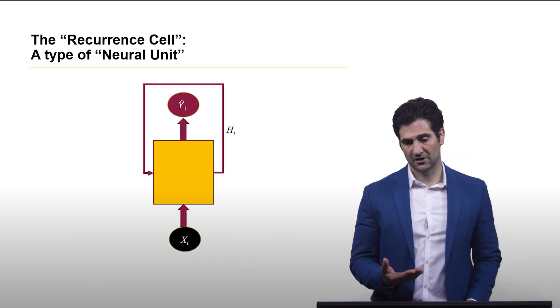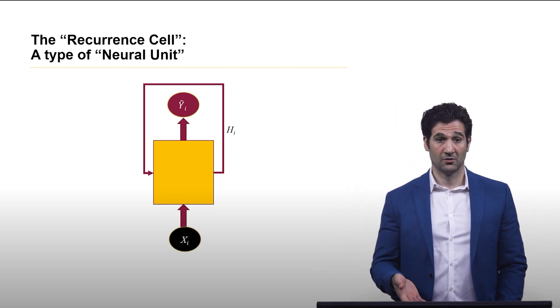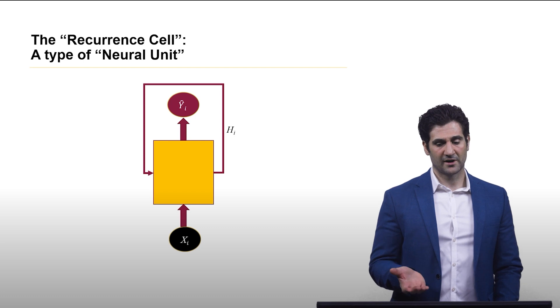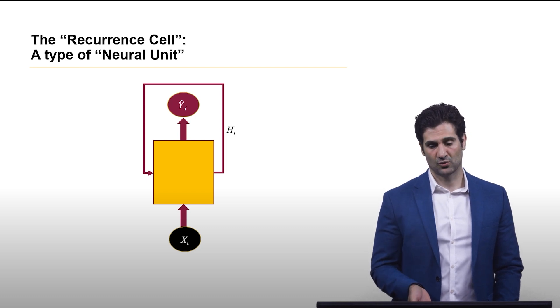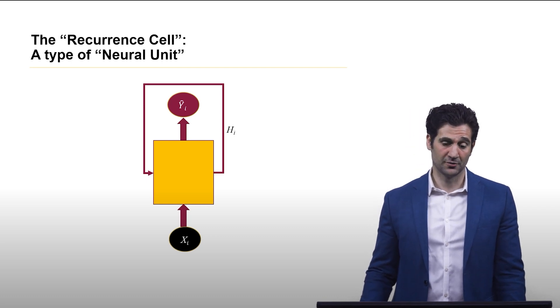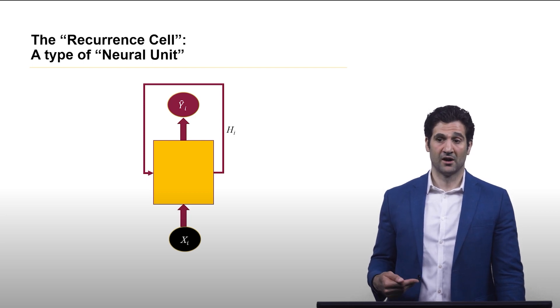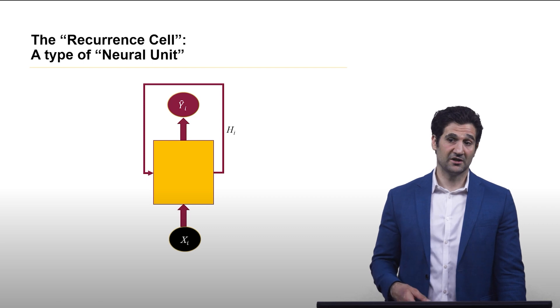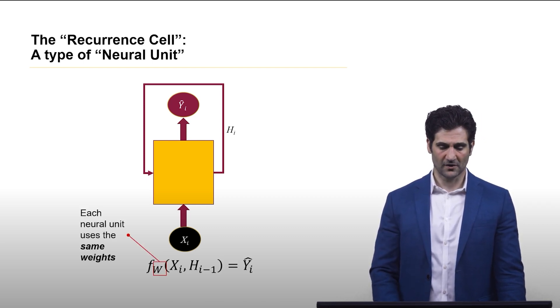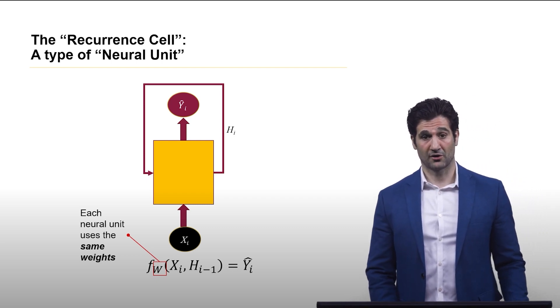So this is, you might have noticed in the slide headings in the last slide or two, it said unfolded. Well, here is the folded up view. This is a recurrent cell. And the reason why it often gets drawn this way where you have x, y hat, and you have this hi variable going in kind of a loop is because this architecture, you want to have the weights be the same within each of these cells. So you only need to specify it once. And that's a really key intuition with recurrent neural networks.